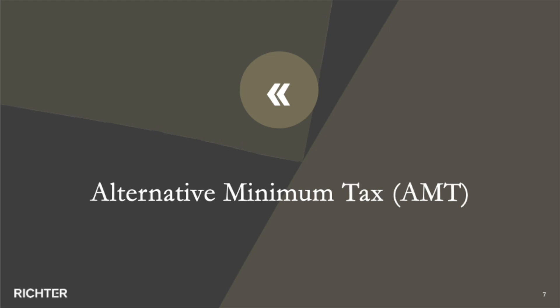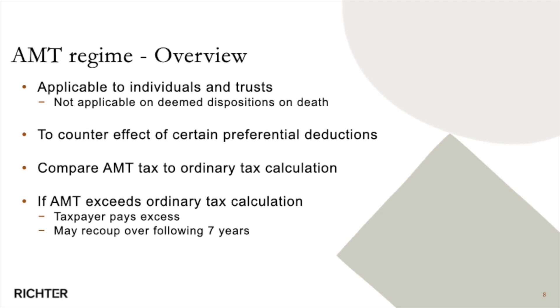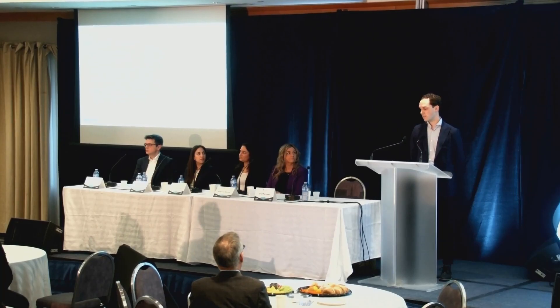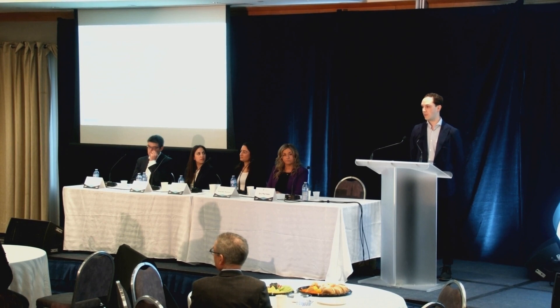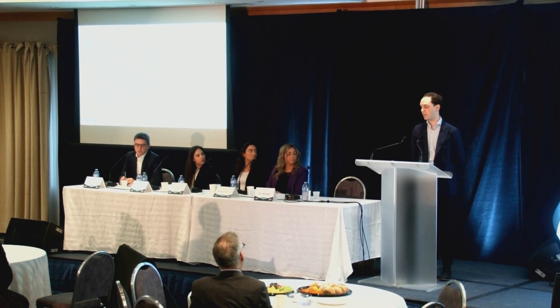What is AMT? AMT is a parallel tax regime to the regular federal tax regime in which the idea is to minimize deductions, reduce discretionary credits, expenses and others, all in the hopes of ensuring that individuals pay their fair share of tax. AMT is effectively a separate calculation in which you compare it to your regular regime. The individual will pay the greater of AMT or the federal regime, and the excess of AMT can be carried forward for seven years against future taxable income in Canada.